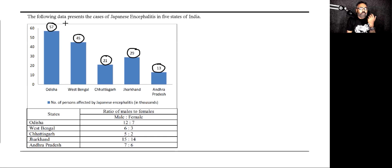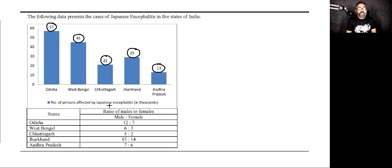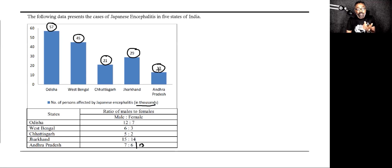So the first step is to understand what data is given to us. The data presents the cases of Japanese encephalitis in five states of India. There are five states given and the number of persons affected is in thousands, which means Andhra Pradesh is 13,000. And then we have ratios of male to female. When I look at this, I already like this because if I total these together, the total would be 13. So number of male to female is 7 is to 6. Since the total itself is 13, number of male is 7 and number of female is 6. For example, for this particular case, if I total this, it comes to 7. I can see a 21 here — 7 times 3 is 21. So this figure is pretty good.